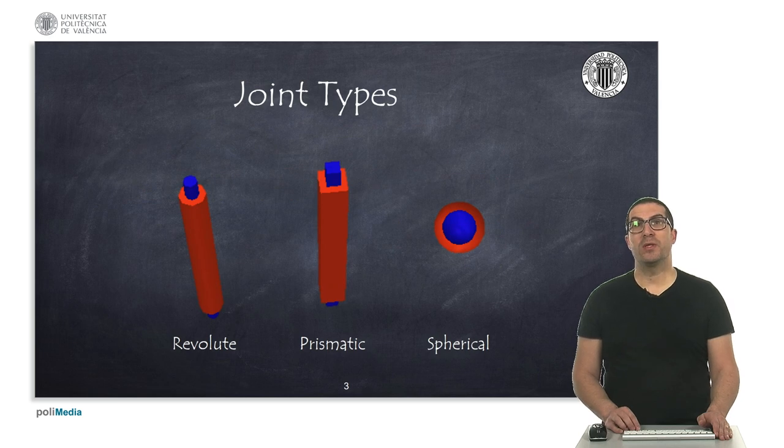There are three types of joints: revolute joints that allow turns around the joint axis, prismatic joints that allow linear displacement on an axis, and spherical joints that allow changing the orientation arbitrarily.